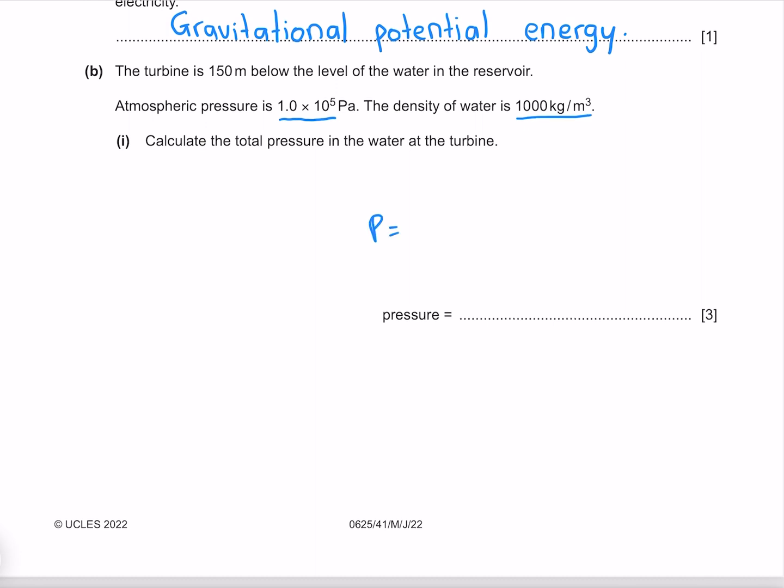Our total pressure is going to be our atmospheric pressure 1.0 times 10 to the 5, plus the pressure from our falling water which is given by H rho G. Where H is our distance of 150, rho is our density of water 1000, and G is our gravitational acceleration 10, which gives me 1.6 times 10 to the 6 pascals.